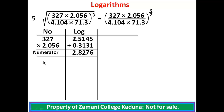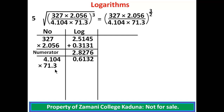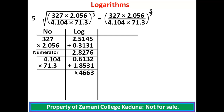For the denominator: the logarithm of 4.104 gives 0.6132, and the logarithm of 71.3 gives 1.8531. Because of multiplication, we add the denominator logs: 2 plus 1 gives 3; 3 plus 3 gives 6; 1 plus 5 gives 6; 6 plus 8 gives 14, write 4 carry 1. Place the decimal point. 0 plus 1 gives 1, plus 1 carried gives 2. This is the denominator.